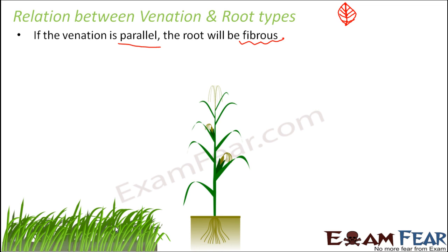Think of grass. If you observe its leaves closely, you will see that they have parallel venation. And if you want to cross-verify, just observe their roots — you will see they also have fibrous roots. Similarly, when you look at other plants like wheat or maize, you can see here in the maize plant that the leaves have parallel venation and the roots are fibrous. So there is a connection.